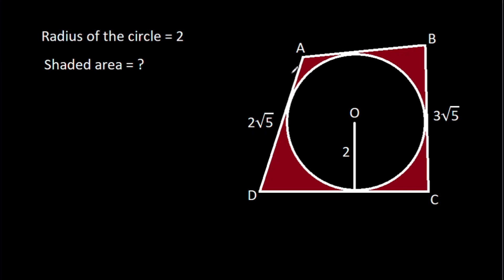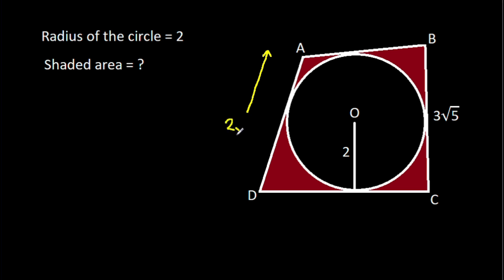In this video, we have been given that AD is 2√5 and BC is 3√5, and the radius of the circle is 2. We have to find the shaded area. So, we have AD is 2√5 and BC is 3√5.